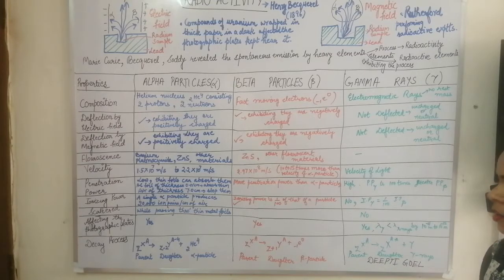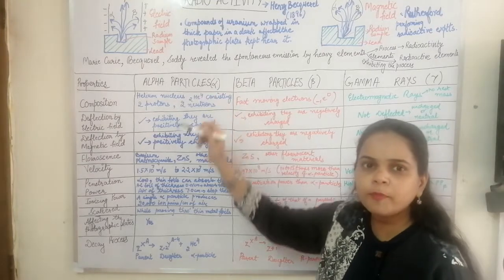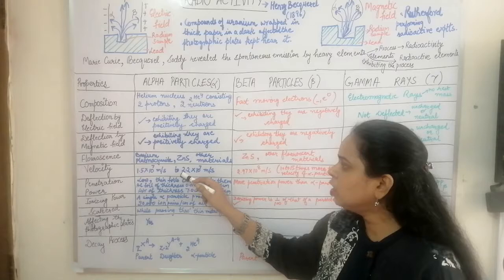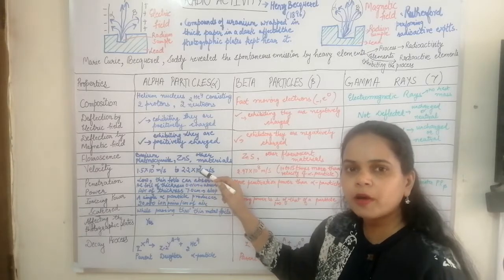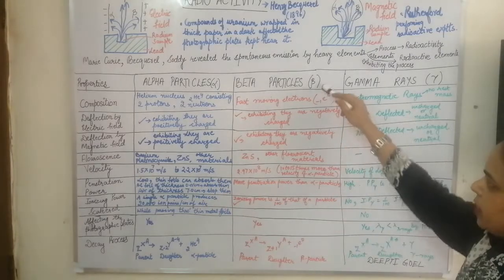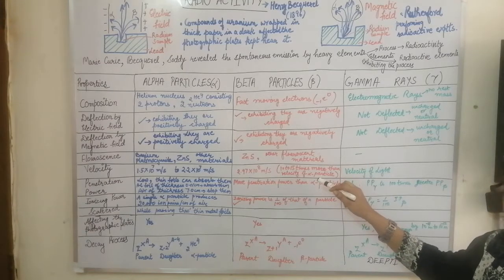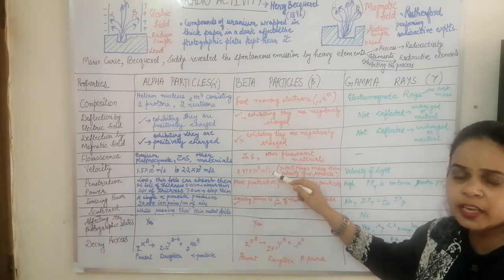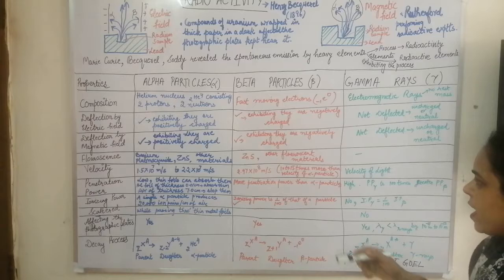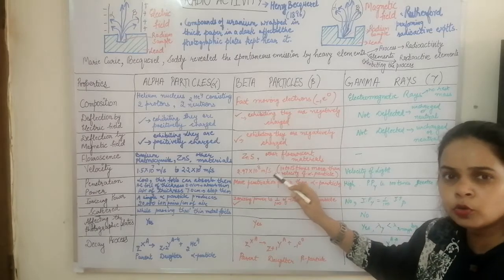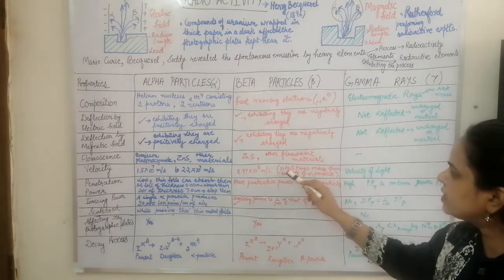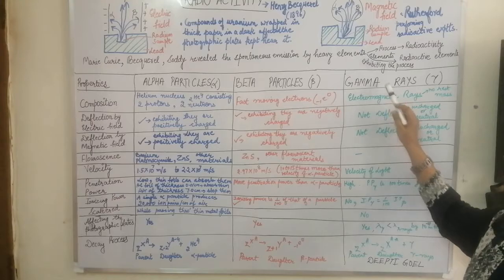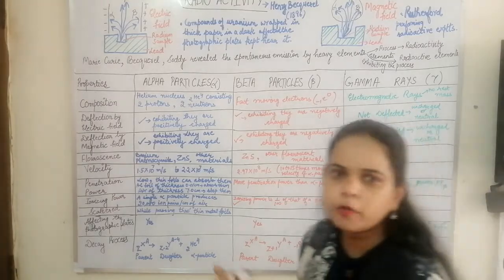Comparing the velocities: the alpha particle has a velocity ranging from 1.5 × 10⁷ m/s to 2.2 × 10⁷ m/s. The beta particle is a fast-moving electron with a velocity of 2.97 × 10⁸ m/s, comparable to the speed of light — 10 to 15 times faster than the alpha particle. Gamma rays always travel at the speed of light.